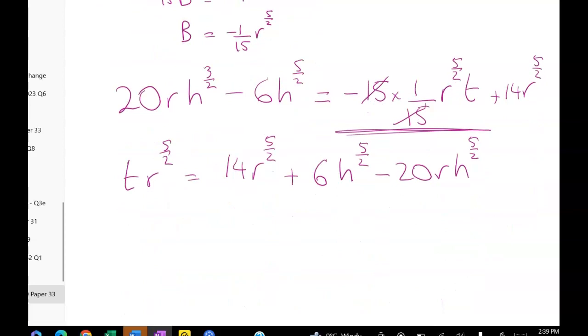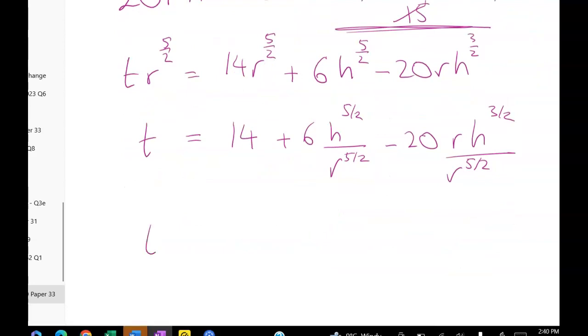And so here, that should be a three here. Now we're going to divide through by R to the five over two. So we get T is equal to 14 plus six H to the five over two over R to the five over two minus 20 R times H to the three over two divided by R to the five over two. Now you probably technically are going to get full marks for that, but it's pretty ugly. So we can change it to T is equal to 14 plus six times H over R to the five over two minus 20 H over R to the power of three over two.